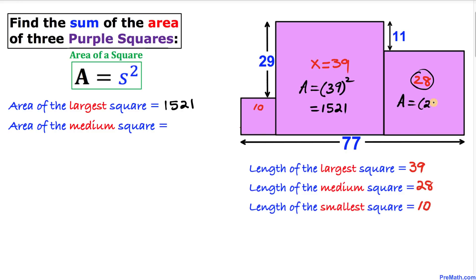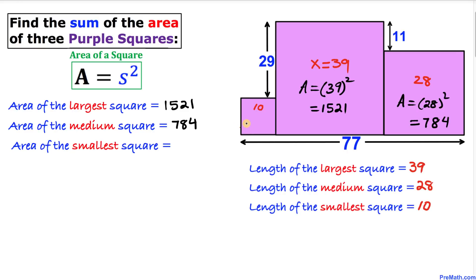The medium square has side length 28, so its area is 28 squared, which equals 784. The small square has side length 10, so its area is 10 squared, which equals 100.